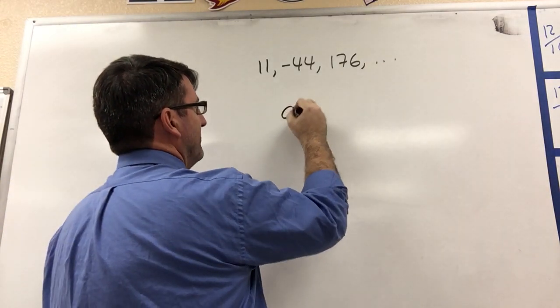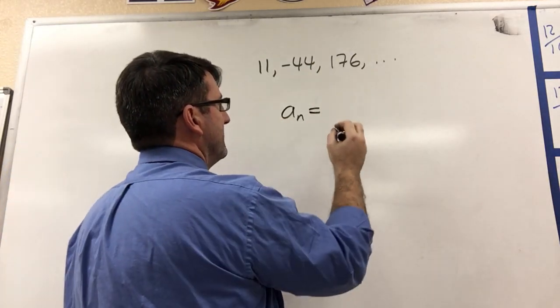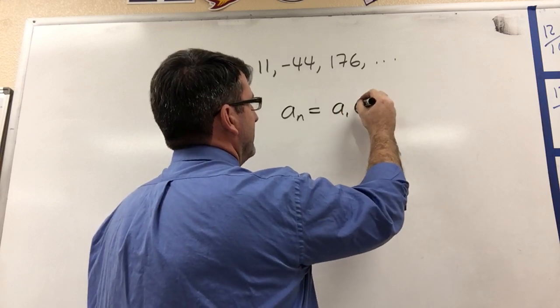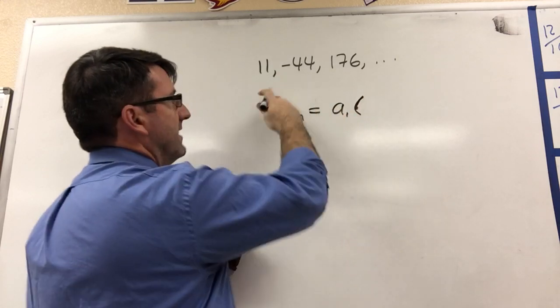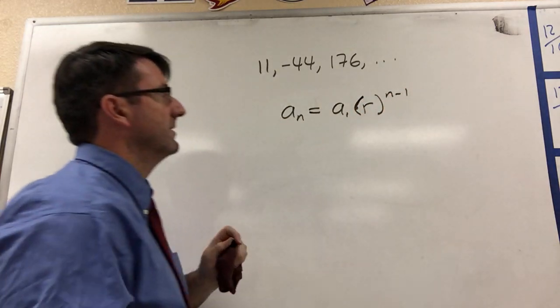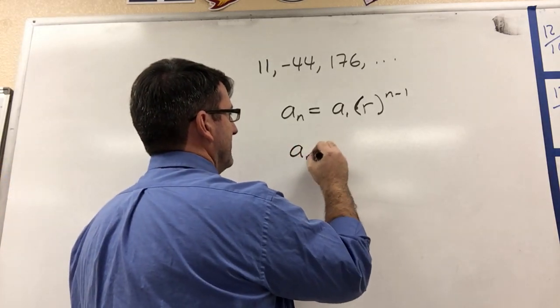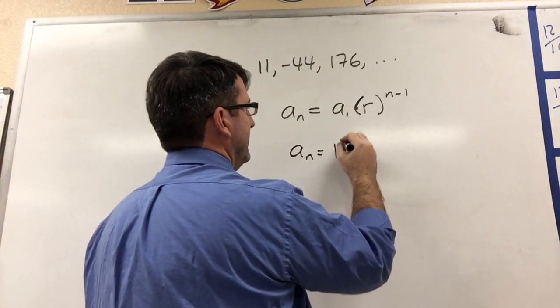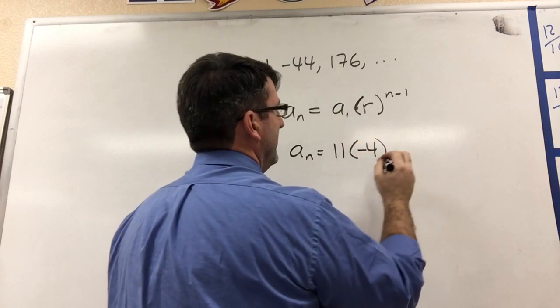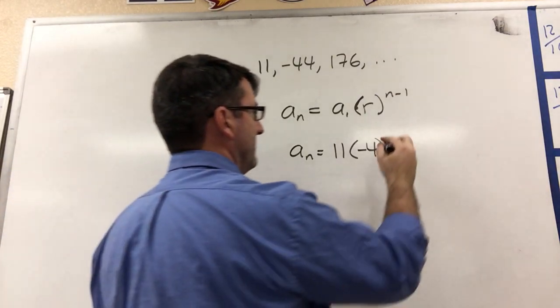The explicit formula for a geometric sequence is a sub n equals the first term times the common ratio taken to the n minus 1 power. So in this case, the first term is 11, the common ratio is negative 4, and we're going to take that to the n minus 1 power.